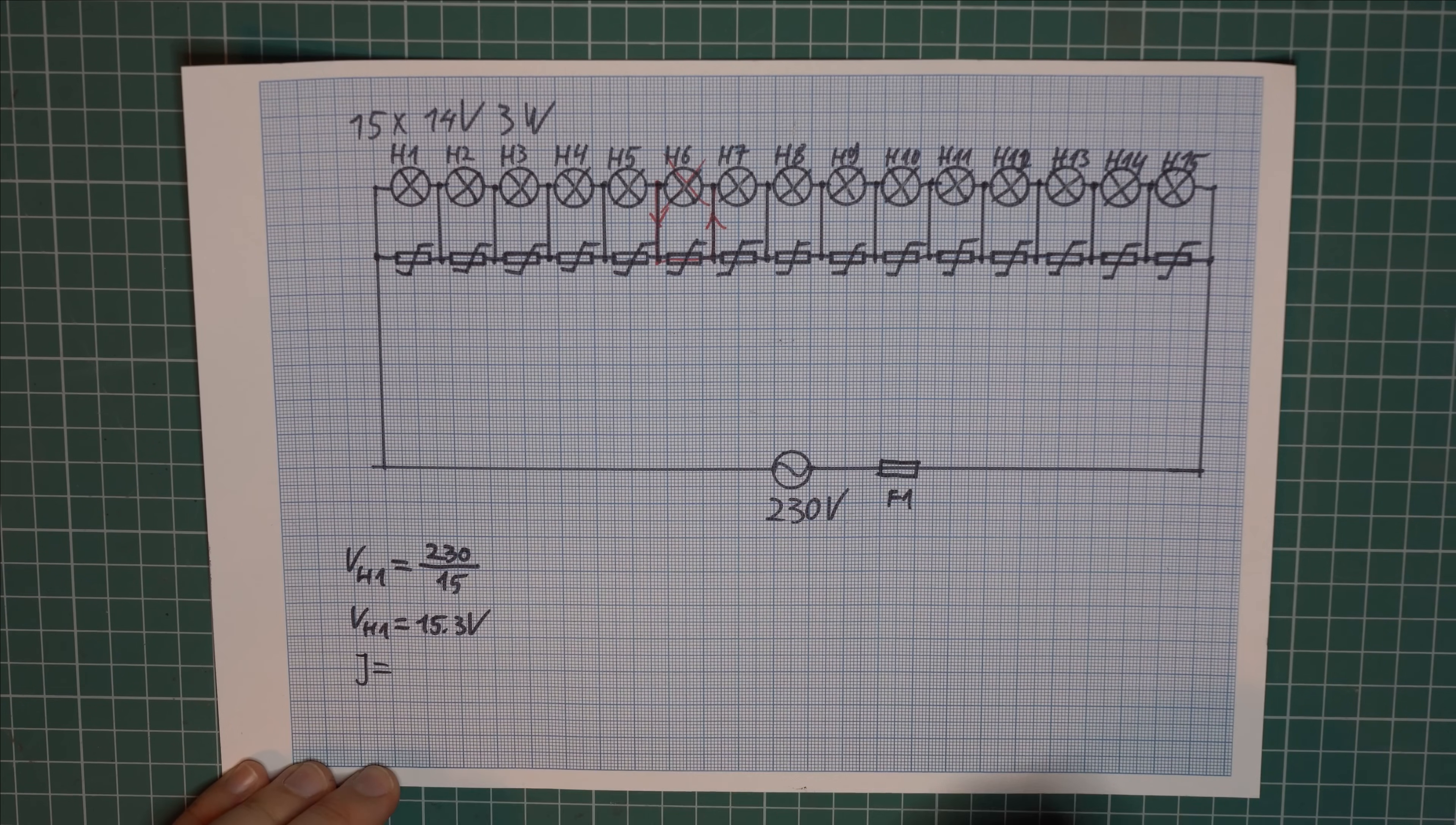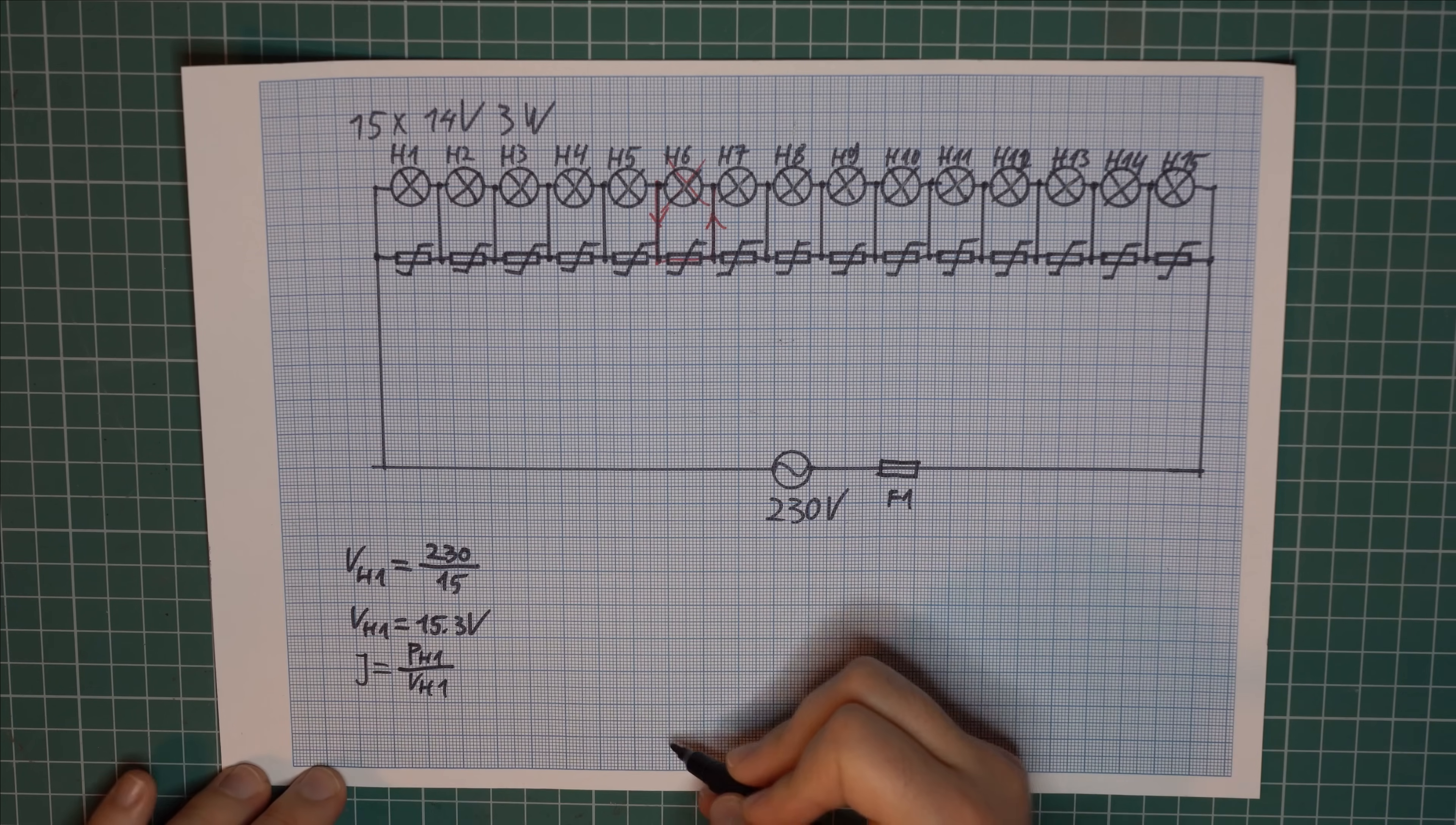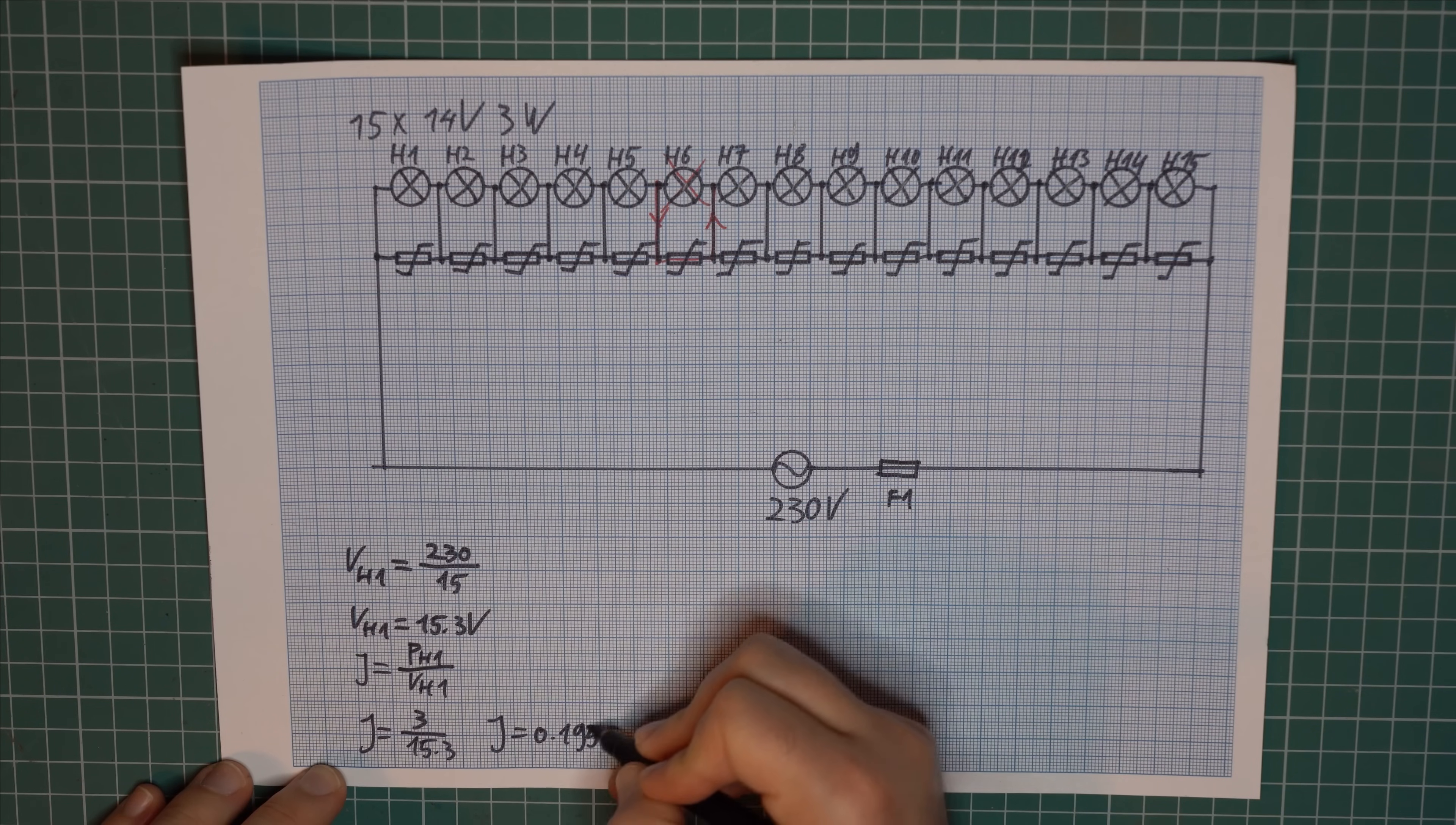So the current is equal to the power of one light, let's call it PH1, divided by the voltage across one light which is VH1. And the current here is 3 watts divided by 15.3. So the current is around 195 milliamps.